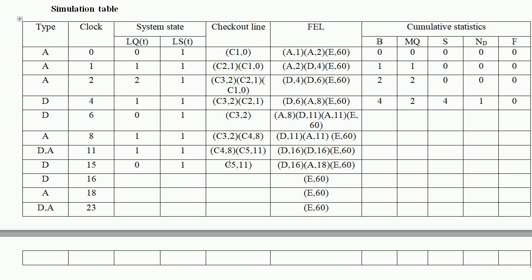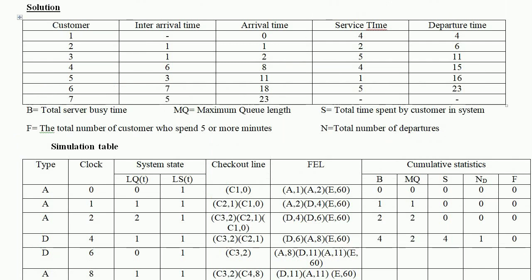At clock time 16, customer 5 departs. The next arrival is at minute 18, so the checkout line is empty (Ls=0, Lq=0) — the server is idle from minute 16 to minute 18. The future event list contains arrival at minute 18 and departure at minute 23. We do not write the arrival at minute 23 since we won't calculate that customer's departure.